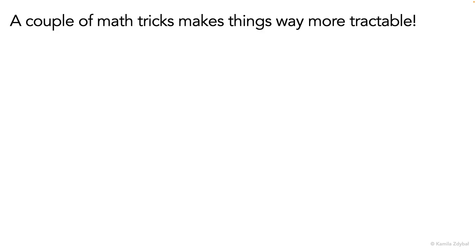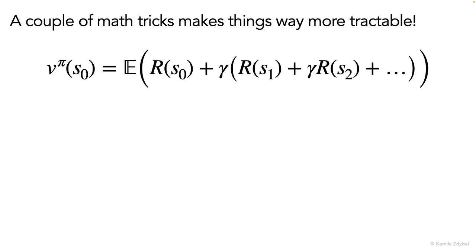So here's a couple of math tricks. First of all, I'm going to factor out one gamma in front of these future rewards. So all I did here is I pulled that gamma out front — for example, this used to be gamma squared, now it's just gamma.